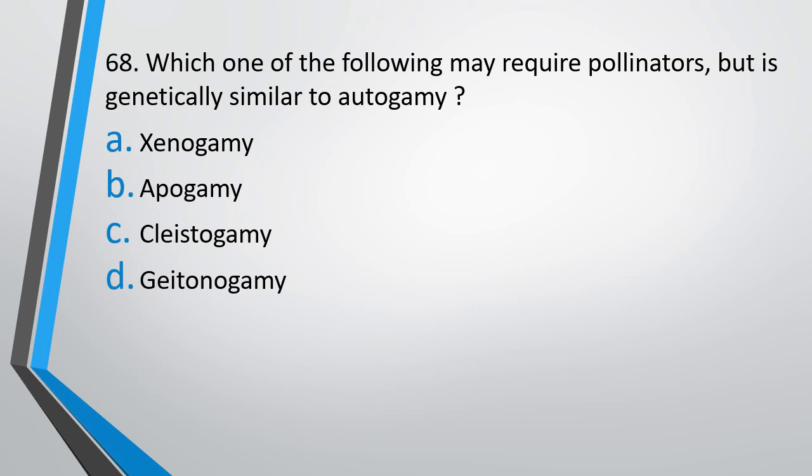Question number 68. Which one of the following may require pollinators but is genetically similar to autogamy? (A) Xenogamy, (B) Apogamy, (C) Cleistogamy, (D) Geitonogamy. The correct answer is option D, geitonogamy.